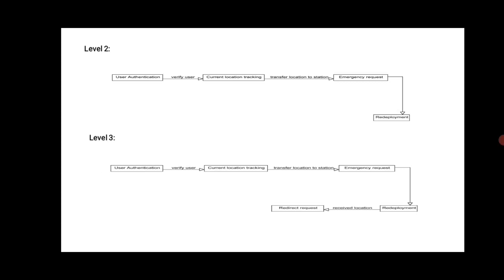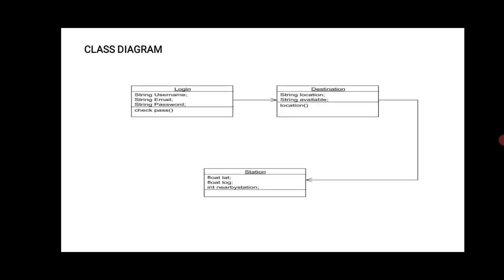The class diagram shows the login class with string username, string email, string password, and check password using MySQL. Destination has string location and string available. Location is shared. The station class contains float log and int nearby station, which indicates nearby stations.